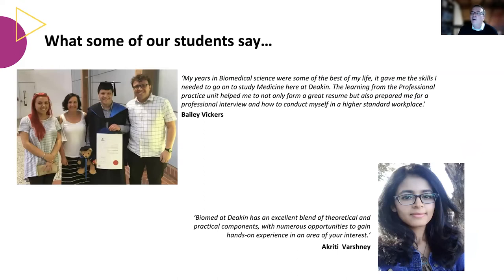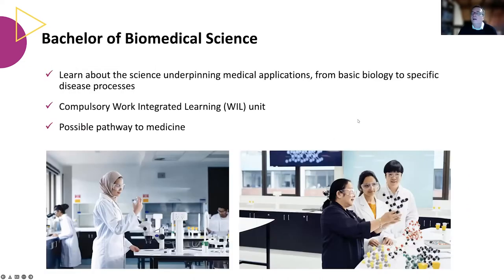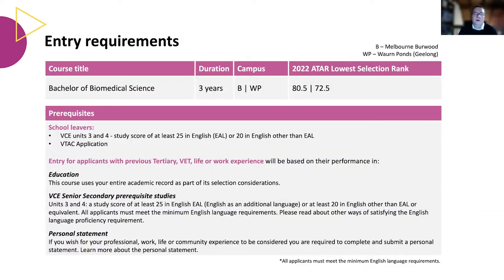Here is a little testimony from some of our graduates. Bailey, who referred to his studies at Deakin as the best time of his life — something we love to hear — joined the Deakin Medical School. Akriti liked the blend of theoretical and practical components and decided to go for a PhD in research. In a nutshell, the Bachelor of Biomedical Science provides students with the science underpinning medical applications from basic biology up to very specific disease processes. It includes a compulsory work-integrated learning unit and is a possible pathway into medicine. The entry requirements are an ATAR lowest selection rank in Burwood of 80.5 and in Warnambool of 72.5, and the only other prerequisites for school leavers are VCE units 3–4 in English with a study score of at least 25.